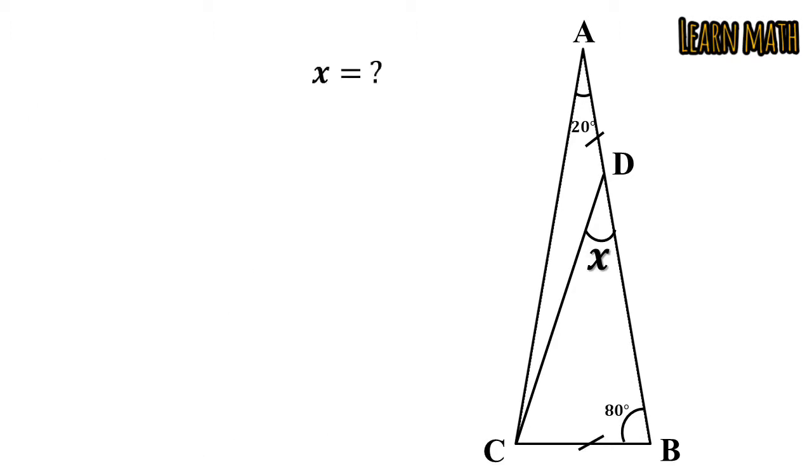Now we have to find the unknown angle, angle X. According to the question, AD is equal to BC. We will make an equilateral triangle with the base BC and let this point be E. So the triangle ECB is an equilateral triangle with equal sides. Draw a bisector of the vertex angle A and join it with E. So the two triangles, triangle ACE and triangle ABE, are congruent triangles.